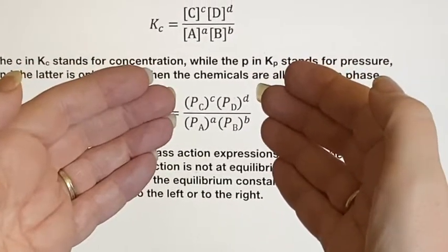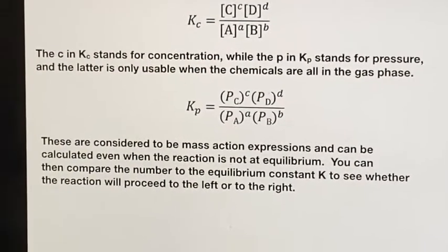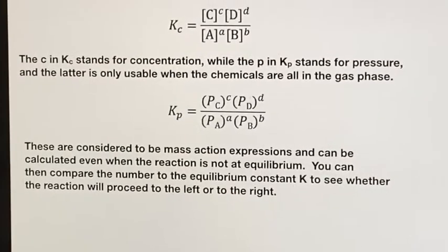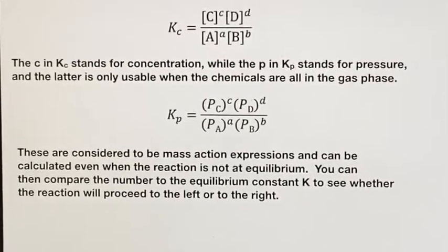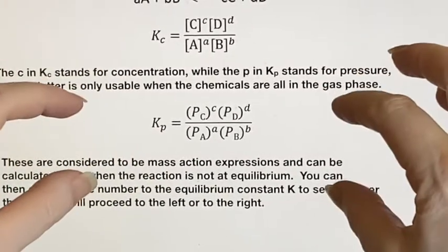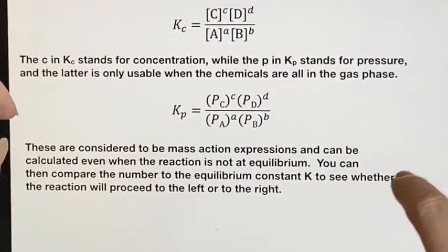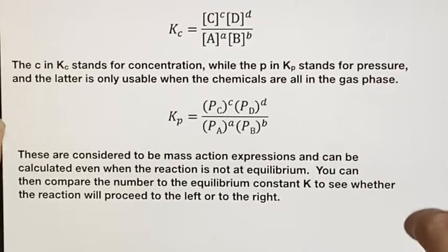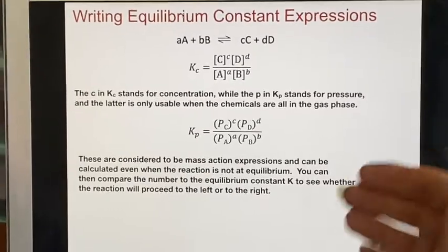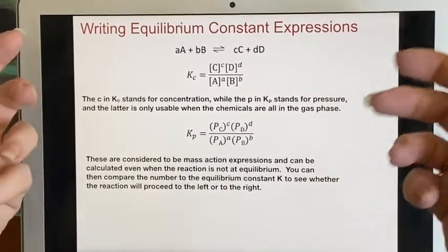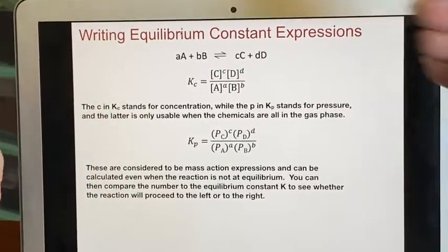Another name for this term, not looking at the K, just looking at this term, is a mass action expression. And you can calculate it anytime. The reaction does not have to be at equilibrium. But if you wait until equilibrium occurs and then you measure them and you put them in this, you will end up with the K value. We will do some of that a little bit later where we're comparing the number at any particular time to what it should be at equilibrium. And that will help us see whether the reaction is going to continue in either the left or the right direction, forward or reverse.